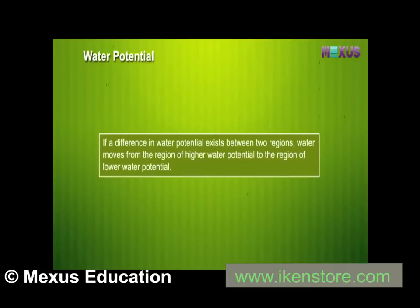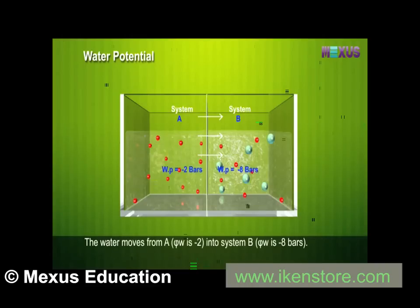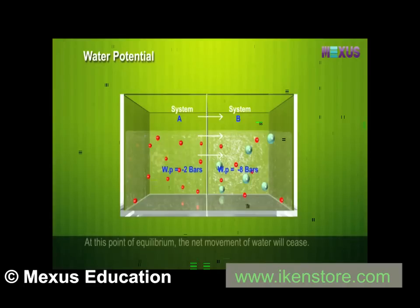If a difference in water potential exists between two regions, water moves from the region of higher water potential to the region of lower water potential. For example, the water potential of system A is −2 bars and system B is −8 bars; water moves from A (ψW = −2) into system B (ψW = −8). This movement continues until the water potential of the two systems becomes equal; at equilibrium, the net movement of water ceases.